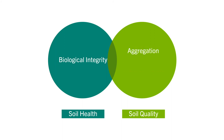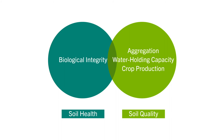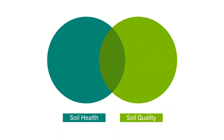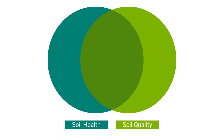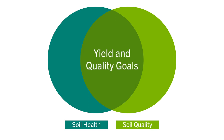Soil health is that biological integrity. Soil quality is more of a measurement of that physical and chemical nature of the field — think about aggregation and water holding capacity. It's also a measure of how well it does its job, so that improvement in crop production. But the end goal is similar: both of those terms can help you with your yield and quality goals.